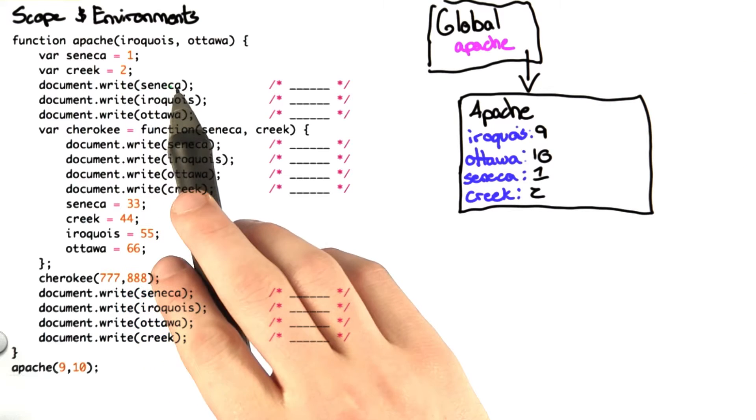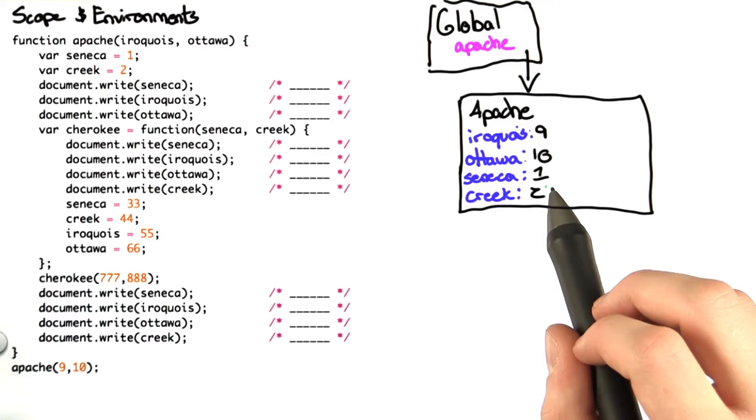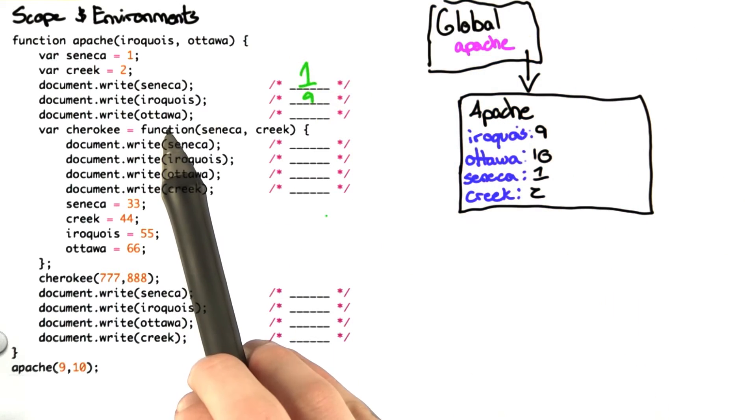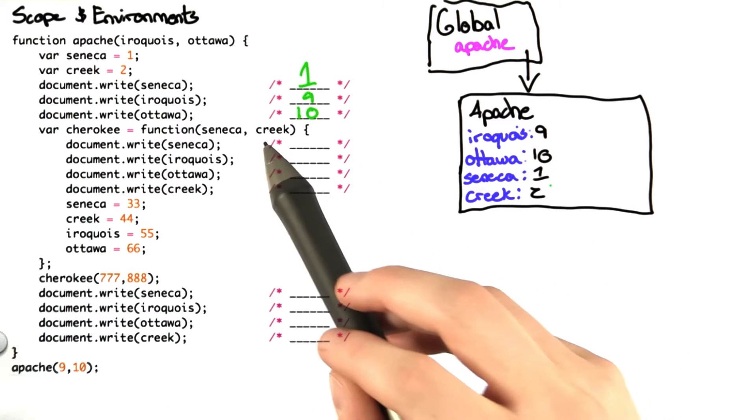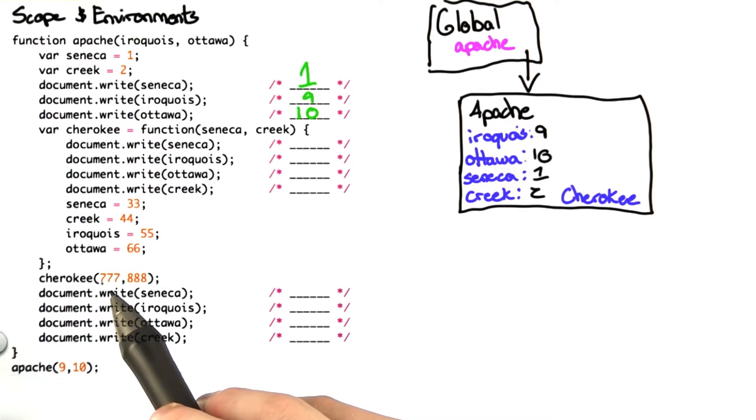When we print out Seneca, we're going to look at the lowest environment, which is Apache, we see Seneca as 1. Iroquois is 9, Ottawa is 10. We now declare a function Cherokee, and we call it with the inputs 777 and 888.